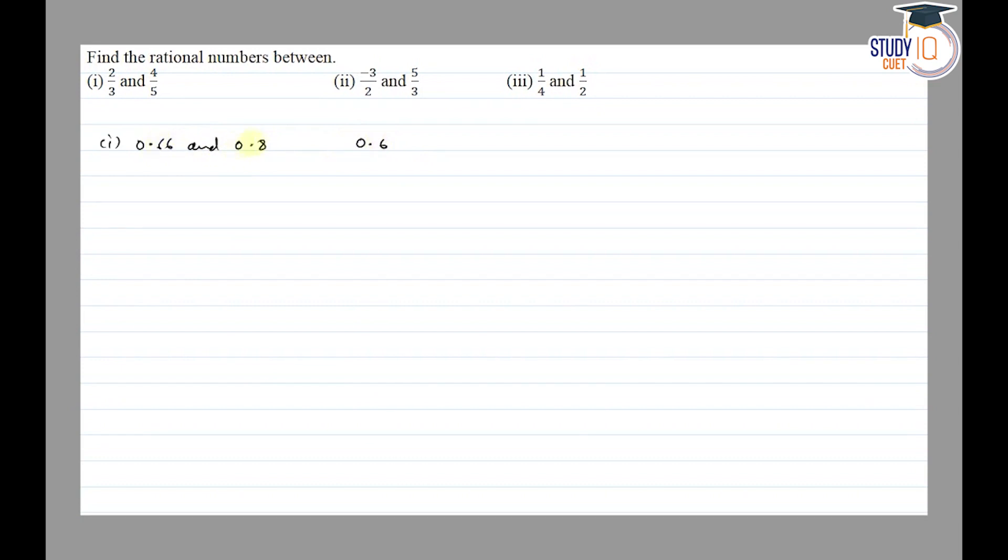It should be greater than 0.66 and less than 0.8, so it will be around 0.67, 0.69, 0.7, 0.75, 0.79. We can find many such numbers if we take decimals. These will be 67/100, 69/100, 7/10, 75/100, and 79/100.